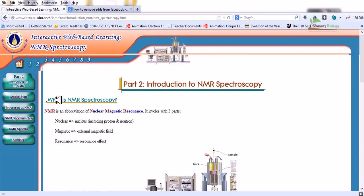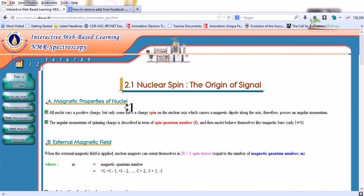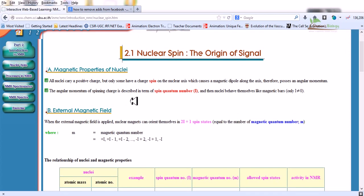Now let us move on to nuclear spin. A magnetic property of nuclei. All nuclei carry a positive charge but only some have a charge spin on the nuclear axis which causes a magnetic dipole along the axis. Therefore they possess an angular momentum. The angular momentum of spinning charge is described in terms of spin quantum number which is denoted with I, and the nuclei behave themselves like magnetic bars.